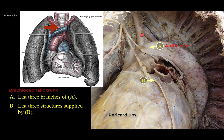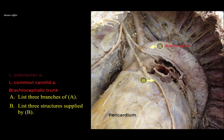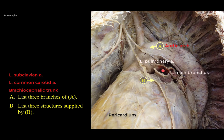The second branch is the left common carotid, and the third branch is the left subclavian artery. Note the structures located inferior to the aortic arch: the left pulmonary artery arising from the pulmonary trunk, the left main bronchus, and the left pulmonary veins. Together, they form the root of the lung.